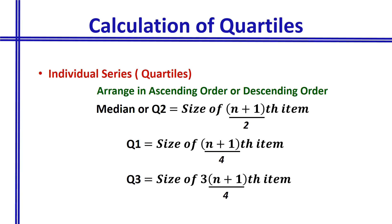Now let us see how the calculation of quartiles is done in the individual series. Just like calculating the median, we arrange the series in ascending or descending order. Since Q2 equals the median, the formula for Q2 is: size of (n+1)/2-th item. For Q1, the formula is: size of (n+1)/4-th item.